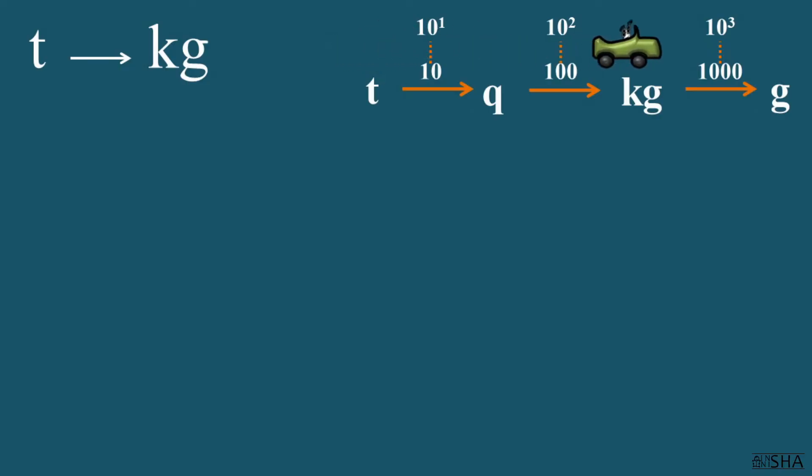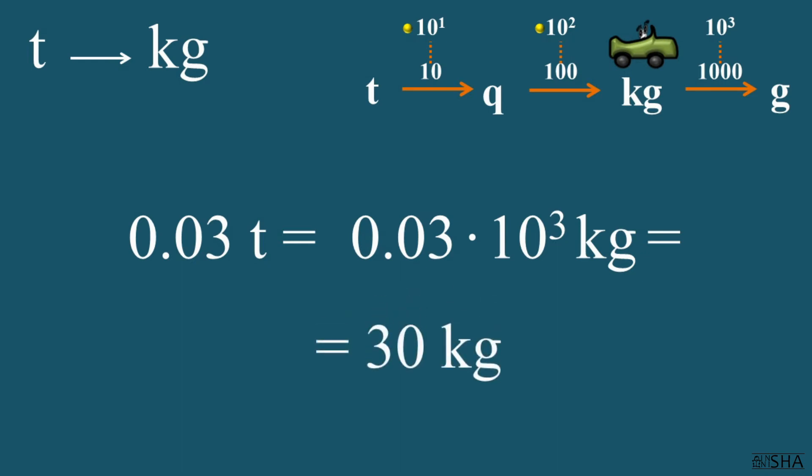Point zero three of a ton, convert to kilograms. So 0.03 must be multiplied by ten to the third power. The answer can be left in this form if you need to solve problems in physics, or you can make some calculations and write down the answer thirty kilograms.